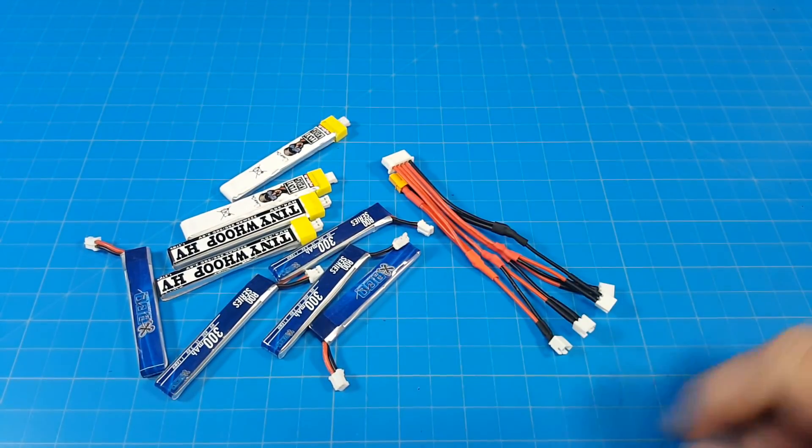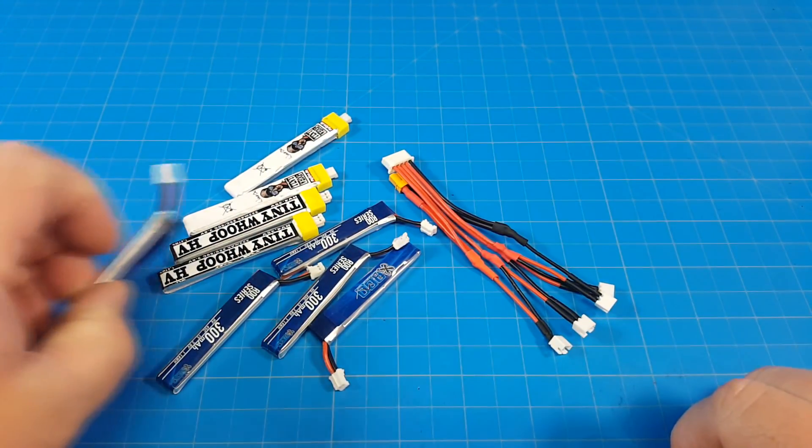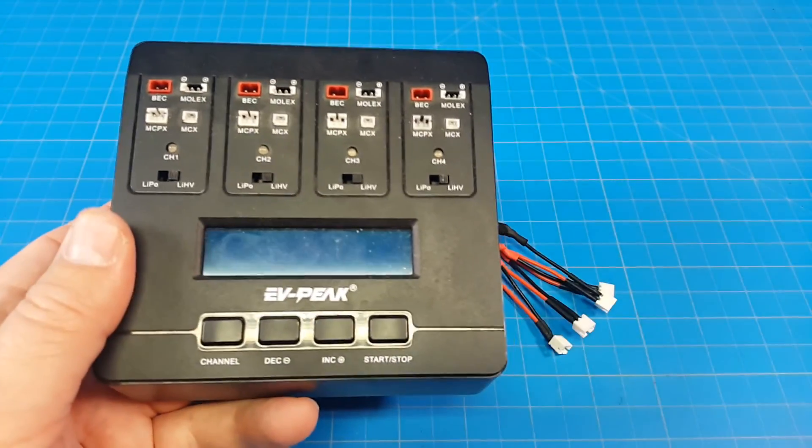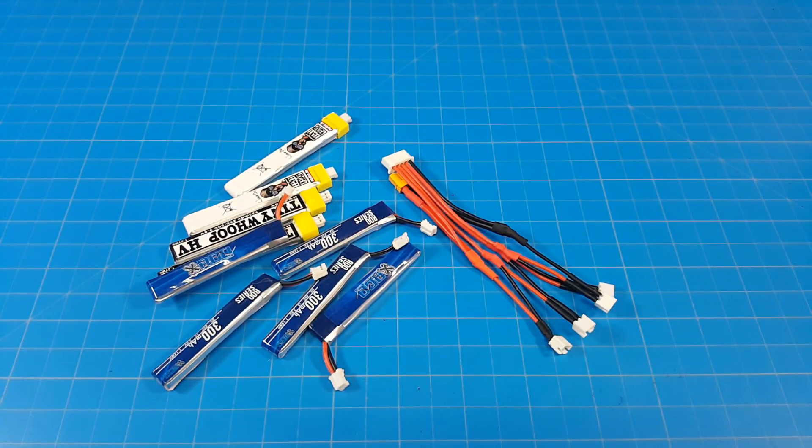So with a little harness like this or something similar to it, you can storage charge your batteries. You can balance charge these batteries just fine as well. You don't have to have a separate 1S charger. You can just do it with a hobby-grade charger, and you can maintain your batteries just as you wish.